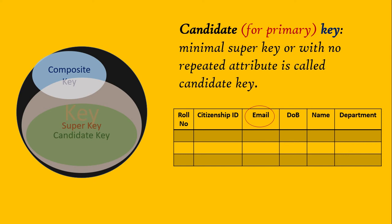Next is candidate key. I like to call it a candidate for primary key. It is a minimal super key — that is, if we reduce the super key to the minimum number of attributes that can uniquely identify a tuple in the table, that is treated as a candidate key. In this table, roll number is a candidate key, citizenship ID is a candidate key, email ID is a candidate key, and date of birth and name together can also be treated as a candidate key.